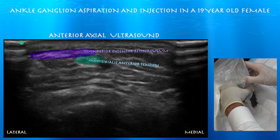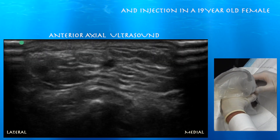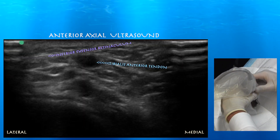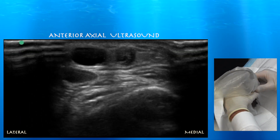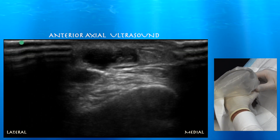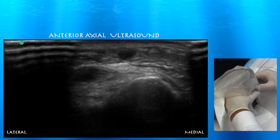Here you can see the tendon without anisotropy as you toggle the probe, and it looks like a normal tendon — so you don't want to mistake that for the cyst. At this level I believe you're at the inferior extensor retinaculum, which you can see overlying the tibialis anterior tendon. The cyst has a lobular structure to it — it's not just a simple little cyst.